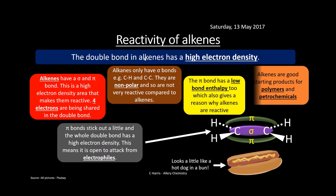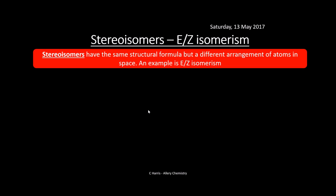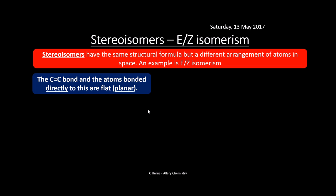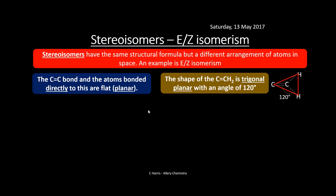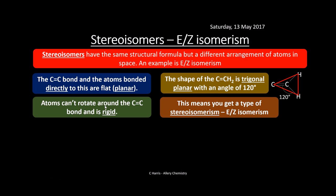Alkenes are really good for polymers, and we'll also look at petrochemicals made from crude oil. Double bonds give rise to stereoisomers, also known as EZ isomerism. These have the same structural formula but a different arrangement of atoms in space. The C=C double bond is planar — the atoms bonded directly to the double bond carbons are in a trigonal planar arrangement with a 120° bond angle. The atoms cannot rotate around the double bond because it is rigid, and this restricted rotation is what gives rise to stereoisomerism.